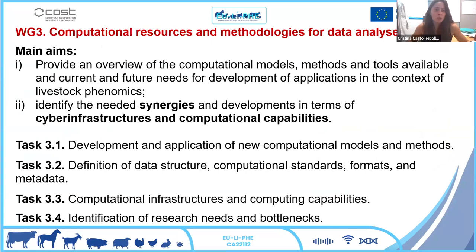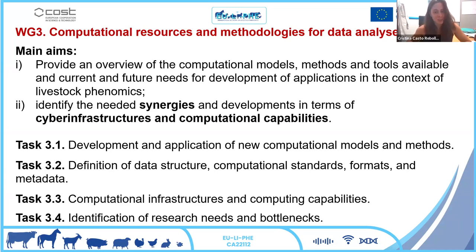Now for the global vision of the project, I will explain the main aims of Working Group 3 in a little more detail. In summary, we have two main objectives focused on giving an overview of the different models, methodologies, tools, and resources in the context of phenomics. Most importantly, we want to identify synergies to solve the challenges and limitations in terms of computation and infrastructure for data storage, pipeline development, etc. That is why we are here today — to see if we can establish synergies that will help us standardize the analysis of phenomics data.